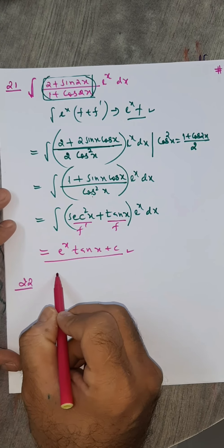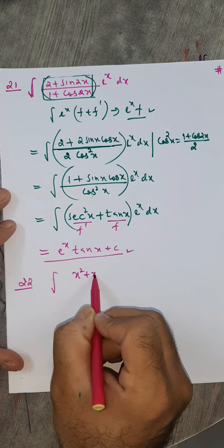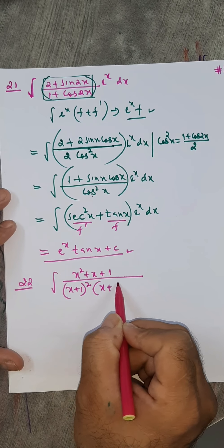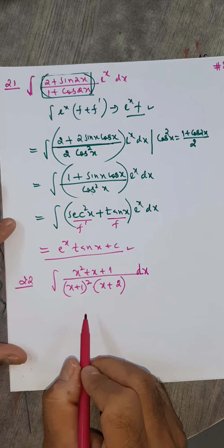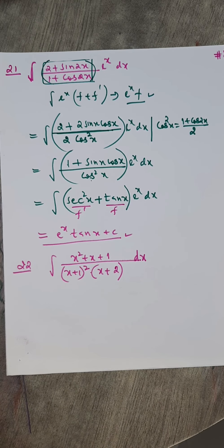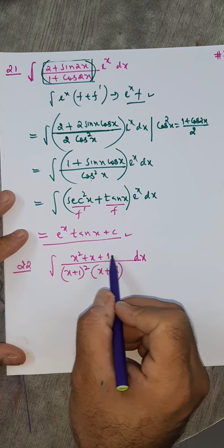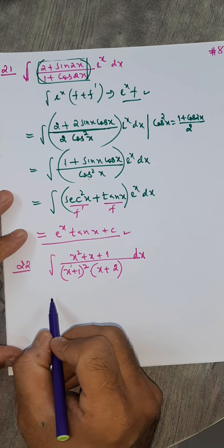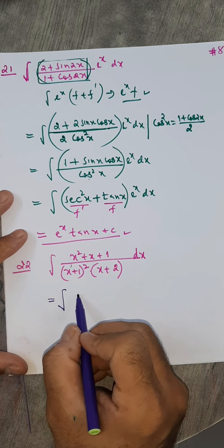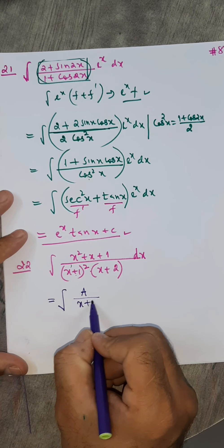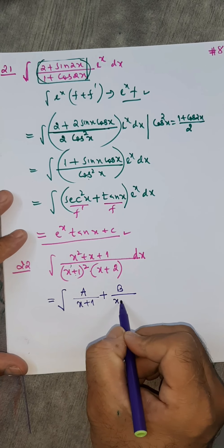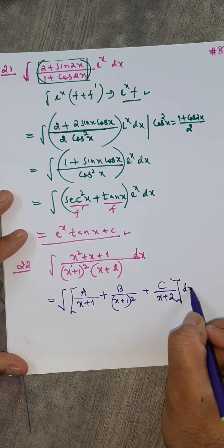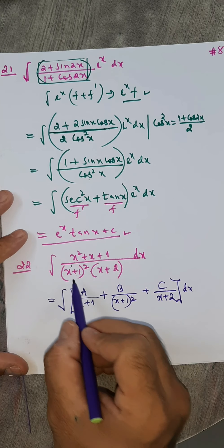Question number 22: integral of (x²+x+1) / [(x+1)²(x+2)] dx. Since the denominator has a repeated linear factor (x+1)² and another factor (x+2), we use partial fractions: A/(x+1) + B/(x+1)² + C/(x+2). We need to compare numerators after setting the LCM, giving x²+x+1 = A(x+1)(x+2) + B(x+2) + C(x+1)².